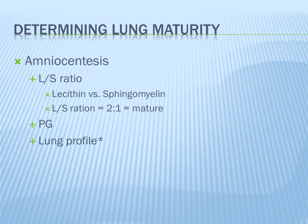The test is called the L/S ratio — looking at lecithin versus sphingomyelin, also written as PC versus PG, since lecithin is the same as PC and sphingomyelin is the same as PG. An L/S ratio of 2 to 1 means the baby's lungs are mature. An L/S ratio of 1 to 1 means the lungs are immature and the baby will likely go into respiratory distress if born at that time. Typically, the lungs become mature at 35 weeks.